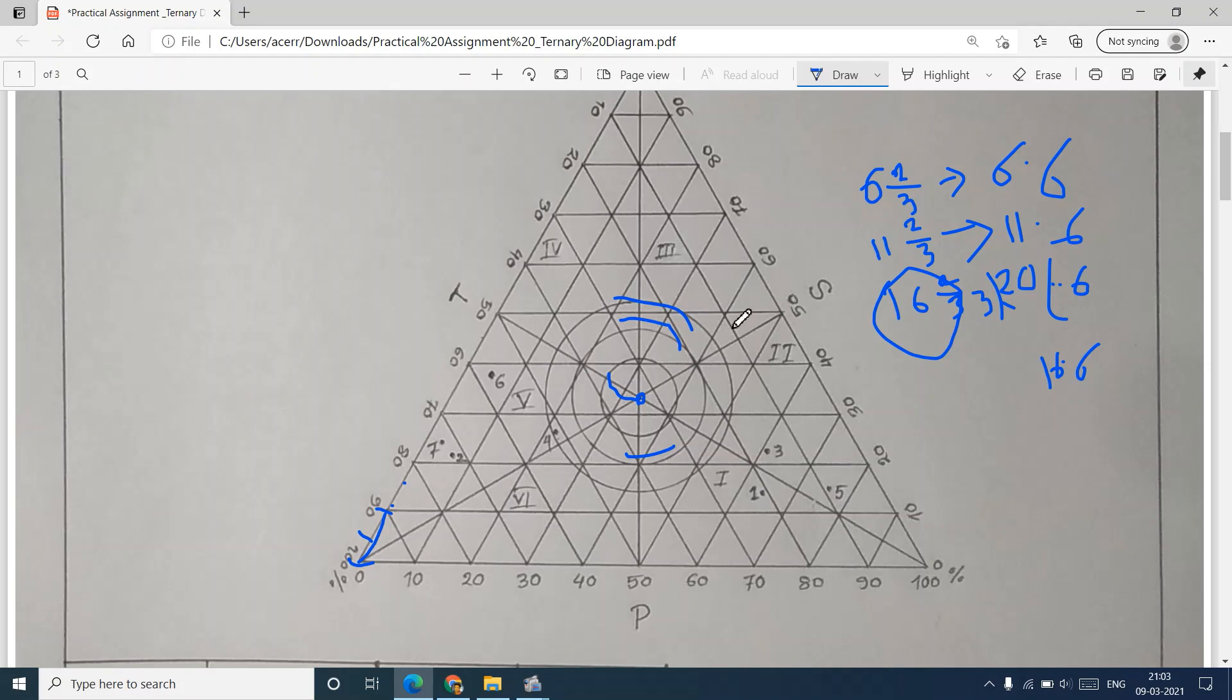First, you'll get these three values given by Mitra: 6 and 2/3, 11 and 2/3, and 16 and 2/3. If you divide 2 by 3, you'll get 0.6, so it becomes 6.6, 11.6, and 16.6. These are in millimeters.